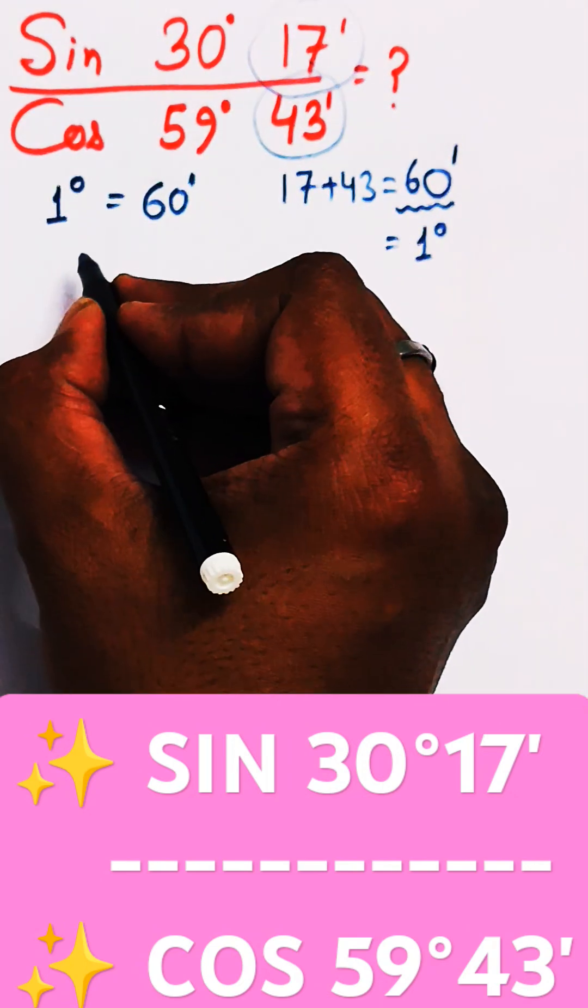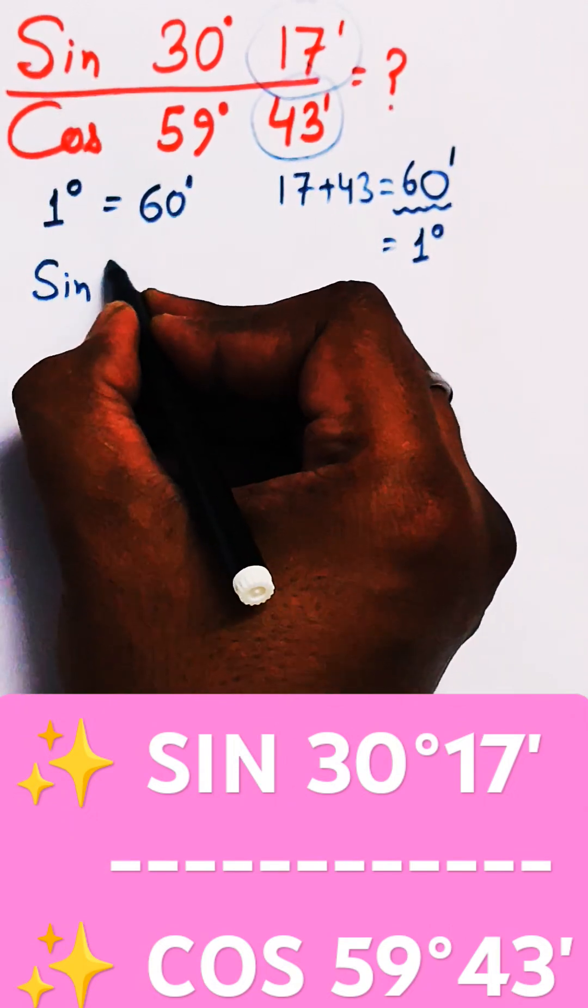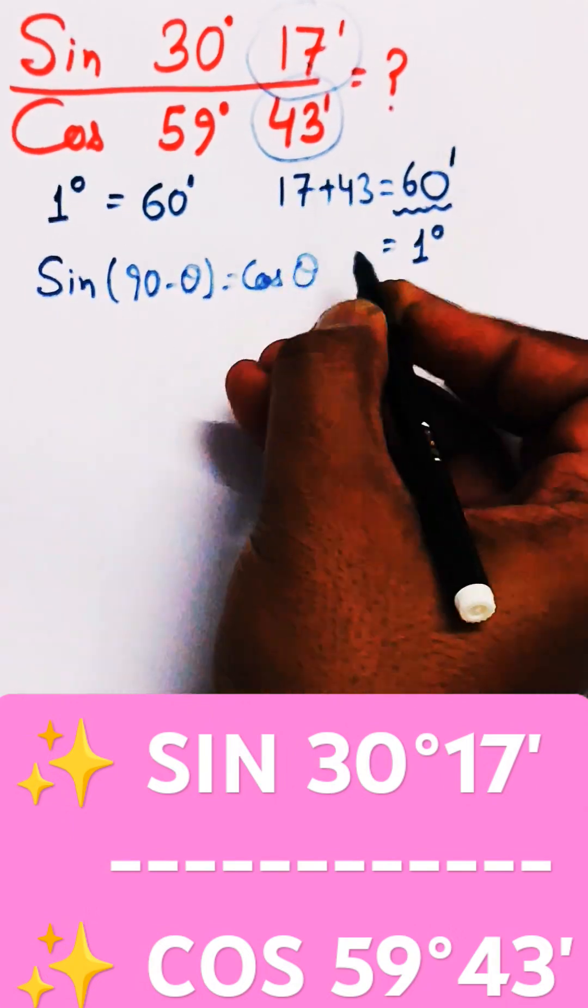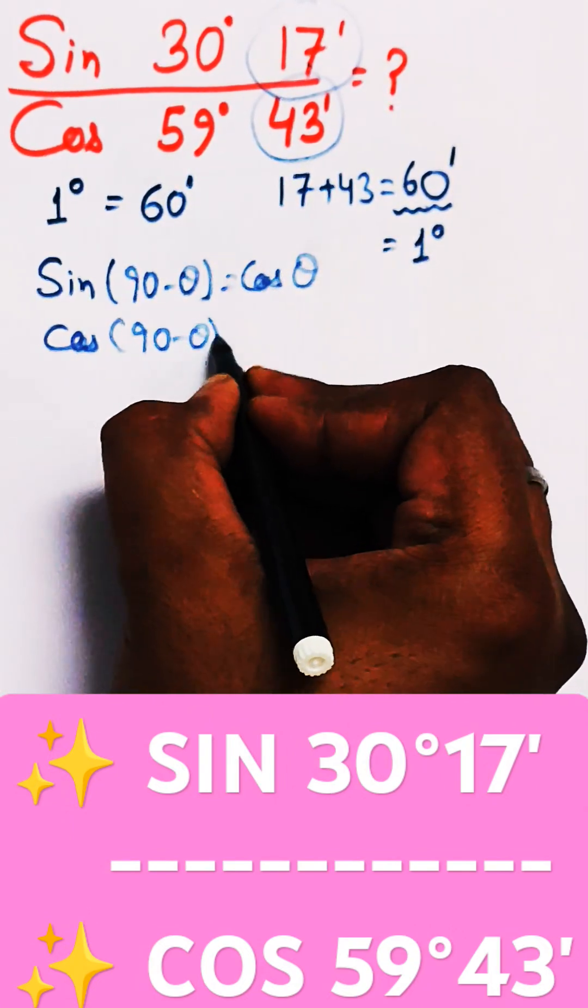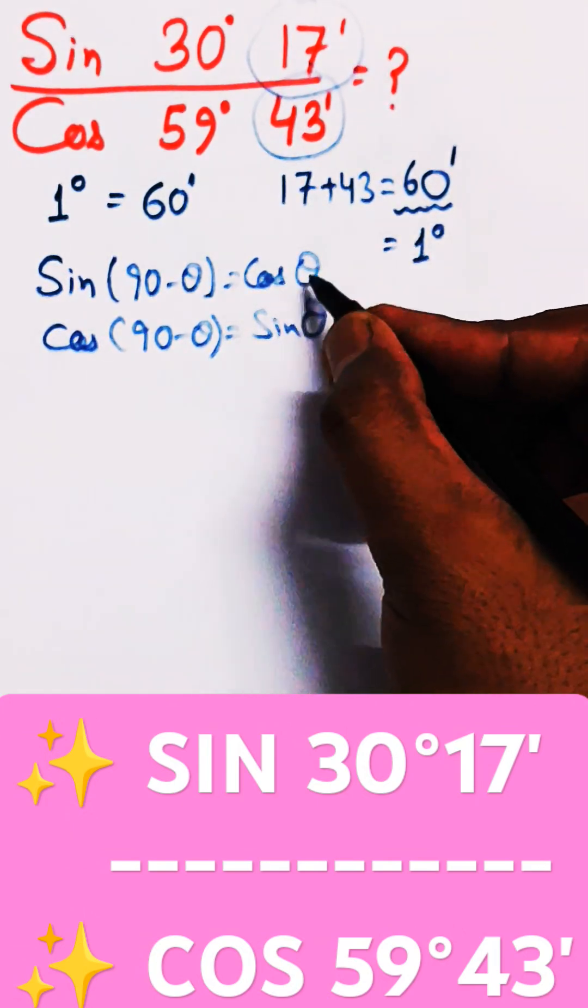Now we know that we will apply the formula sin(90° - θ) = cos θ, or cos(90° - θ) = sin θ. We will be using one of these formulas.